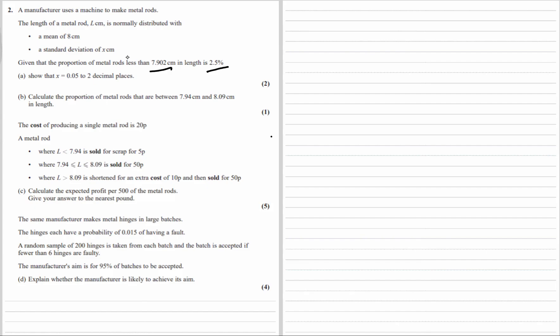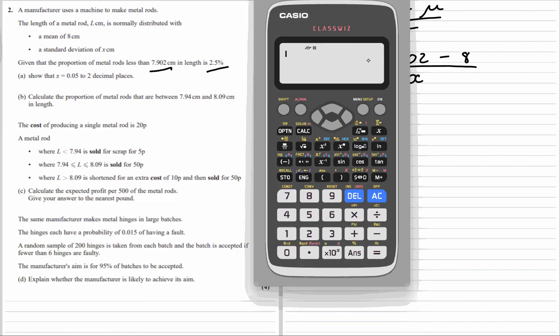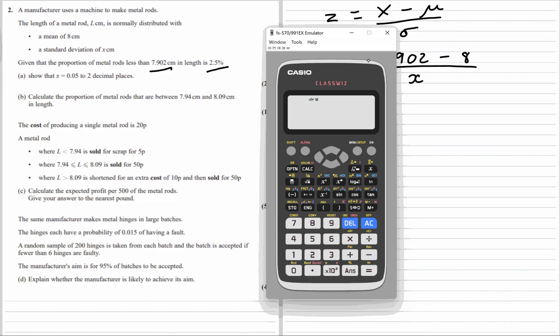To work out the standard deviation, we have to use the z formula. To go from the standard normal distribution, z equals x minus the mean over the standard deviation. We can use the standard normal, which has a mean of 0 and a standard deviation of 1.